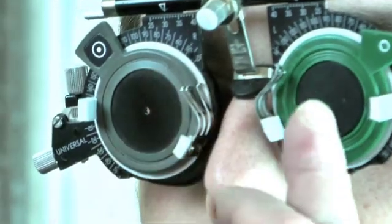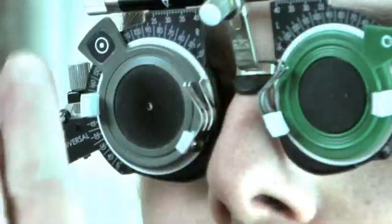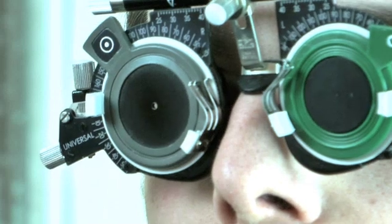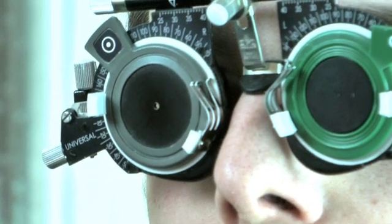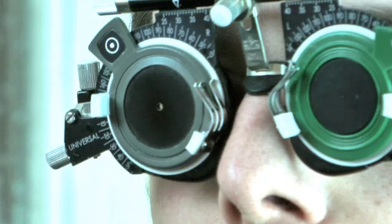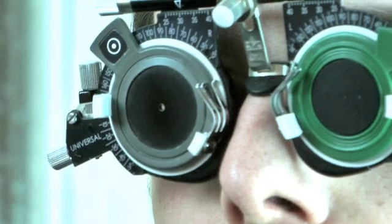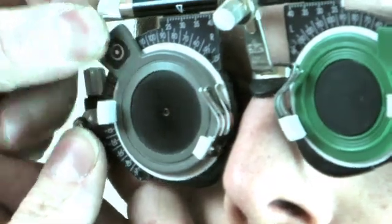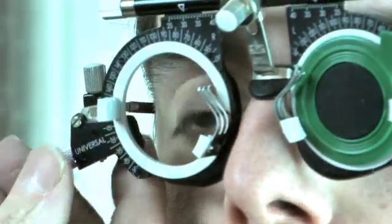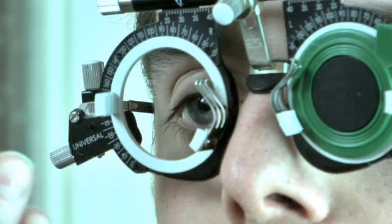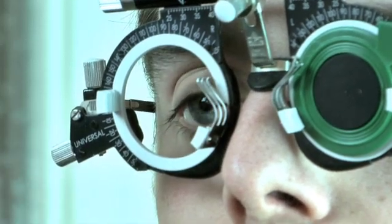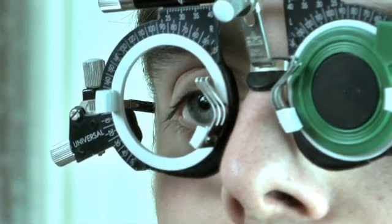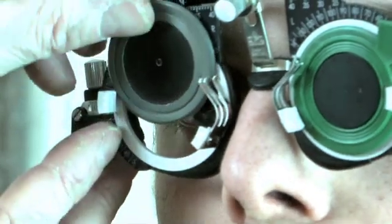He's now got an occluder in the left eye, and the pinhole is now in the right eye. With the pinhole in place, we then ask the patient to see whether it improves his vision. We have to compare his vision between not having anything in the trial frame, and then compare it with the pinhole in place.